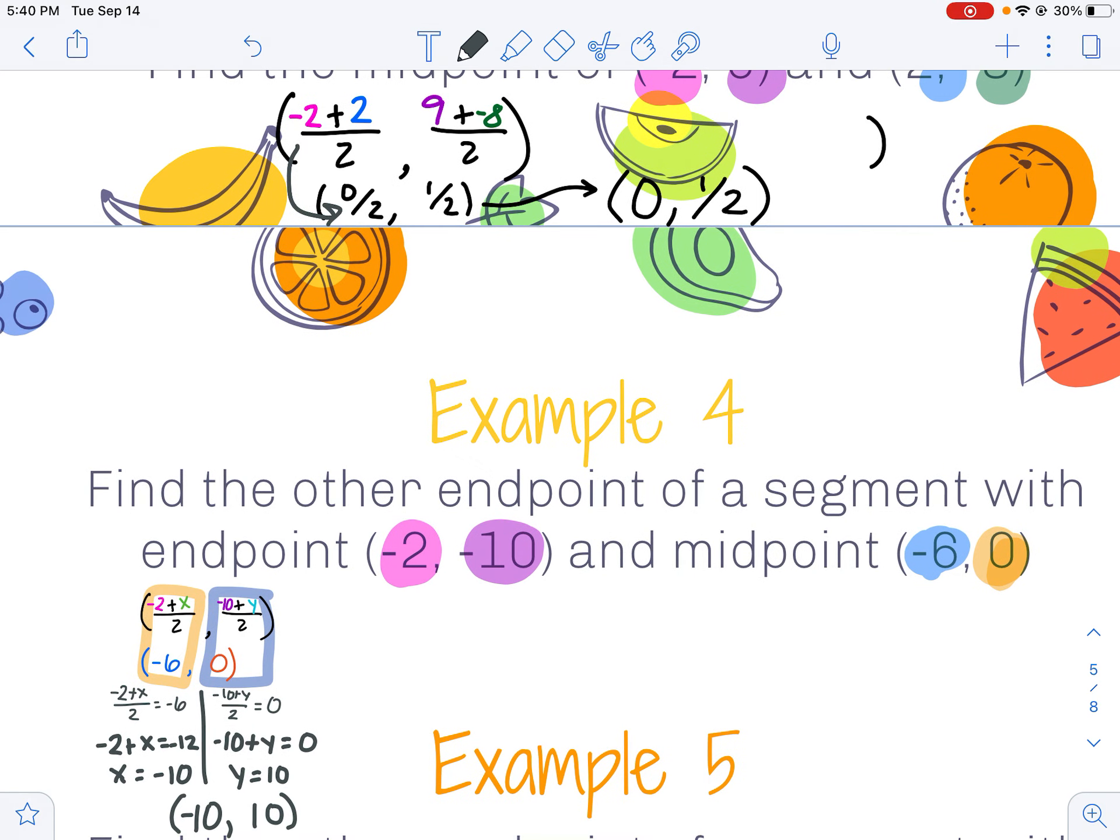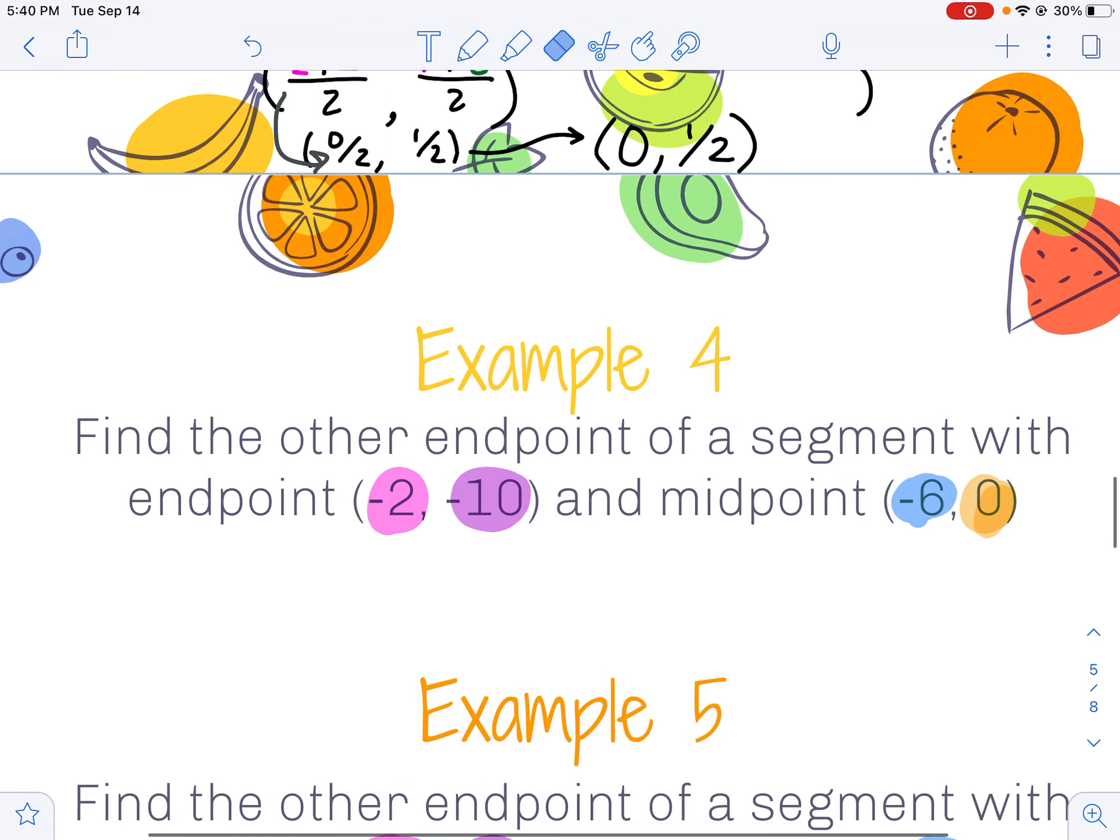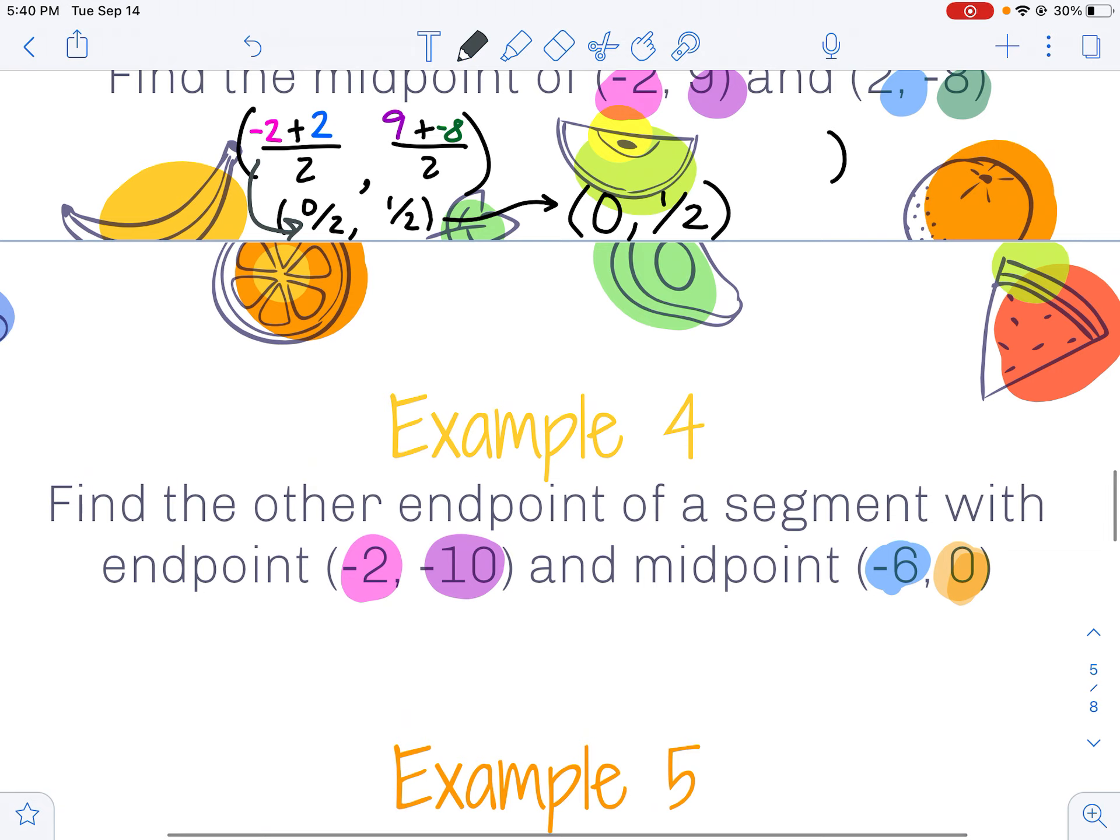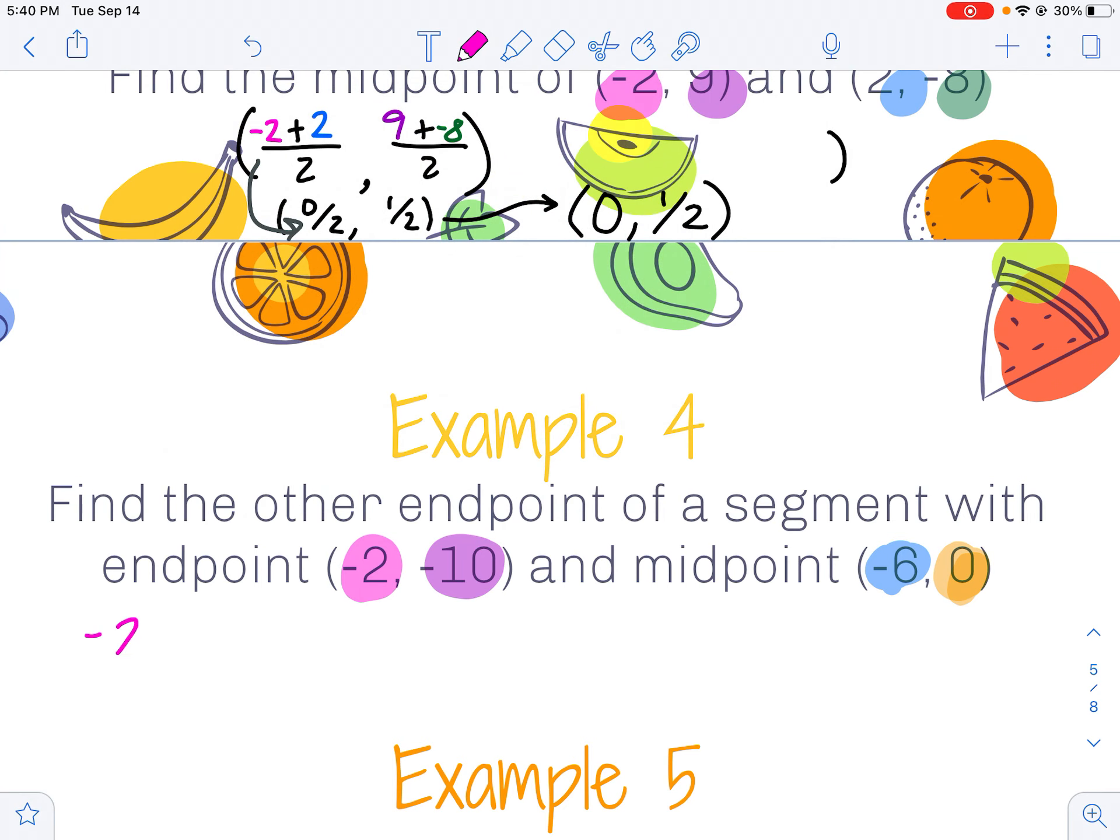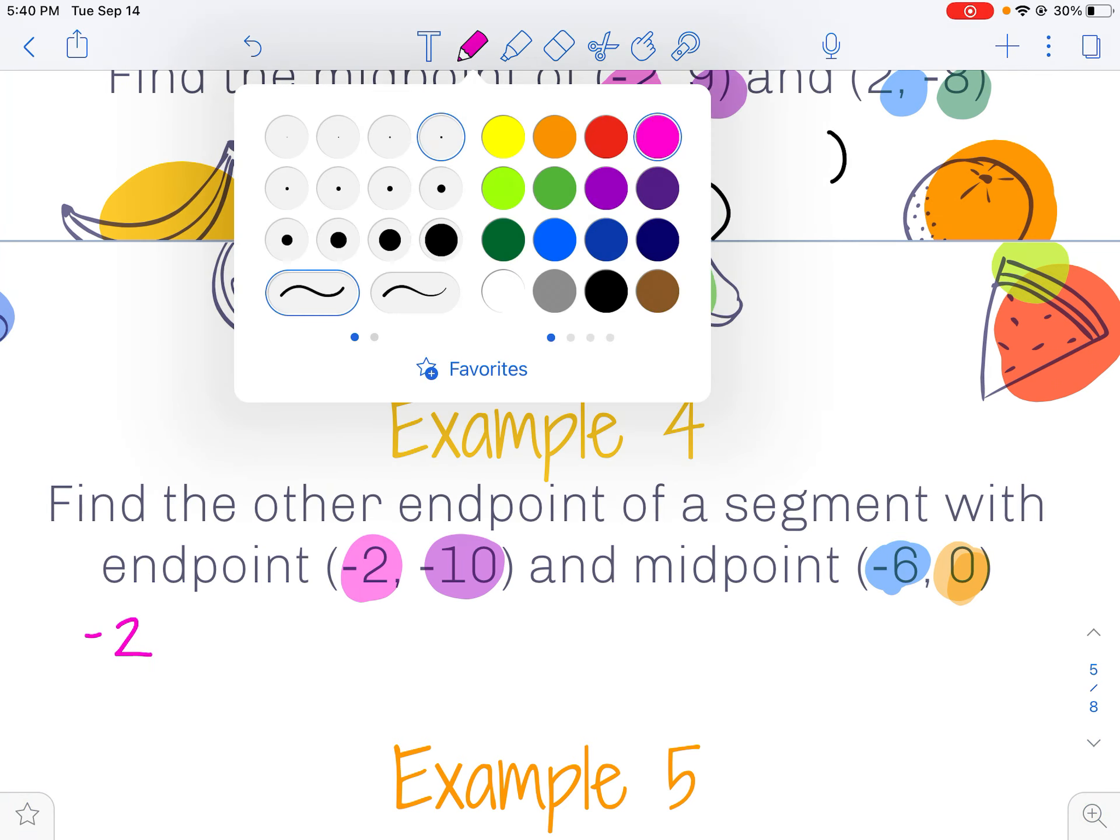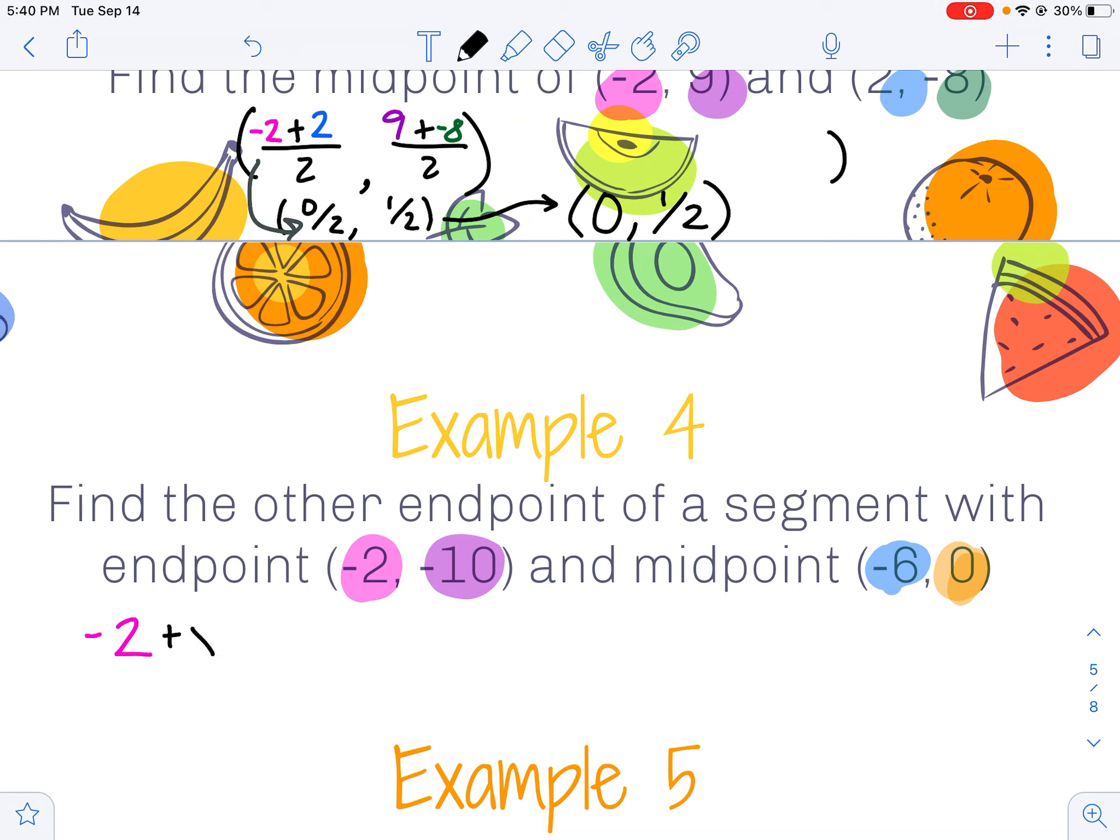On this next example, I'm going to do some algebra to solve it, and then I'm also going to show how I can solve it visually. So to solve it algebraically, I know my first endpoint is at negative 2. I don't know my second one, so I'm going to call it x.